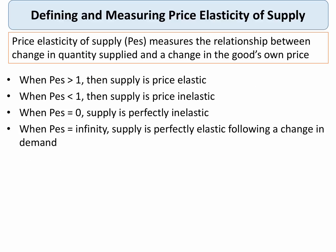Depending on the value we get, we can say something about the elasticity of the supply curve. When price elasticity, or PES, is greater than 1, we say that supply is price elastic — in other words, supply is responsive. When price elasticity of supply is less than 1, supply is inelastic. The two extremes are when supply elasticity is 0, i.e. the supply curve is perfectly inelastic, and when the coefficient of elasticity is infinity — in that situation we say that supply is perfectly elastic. We'll look at some supply curves showing all of these in the next few slides.